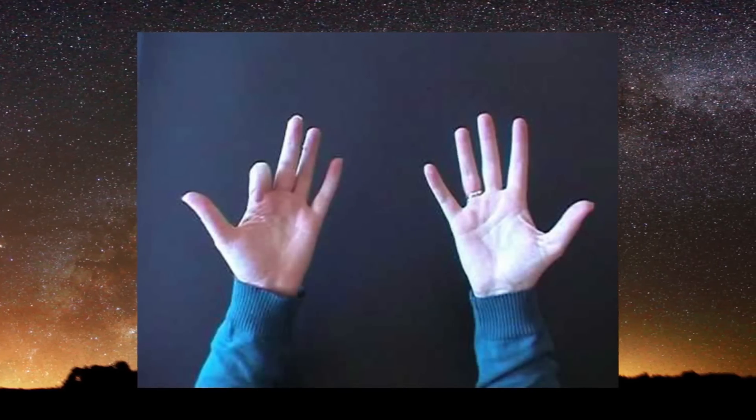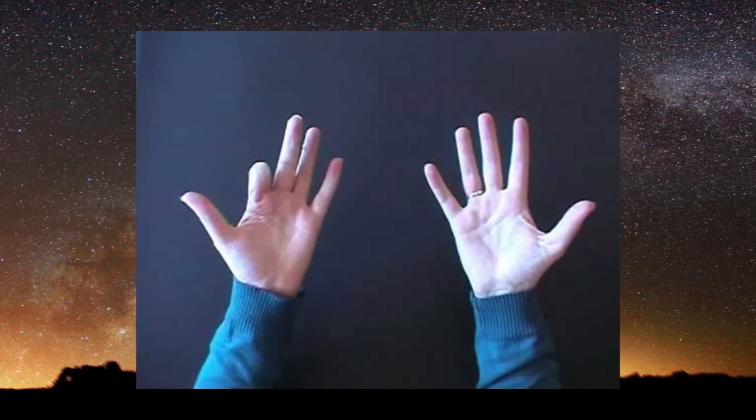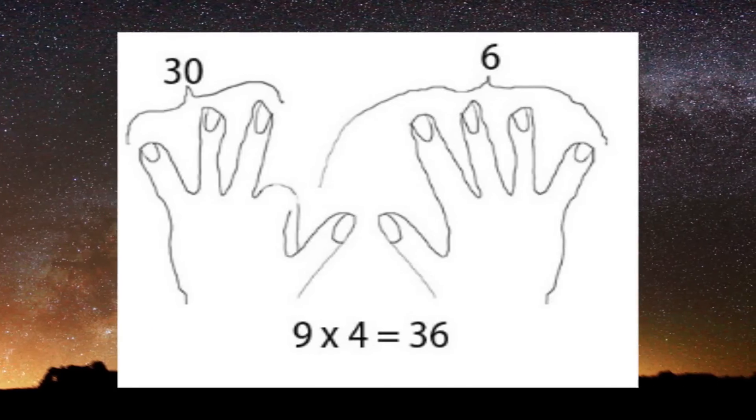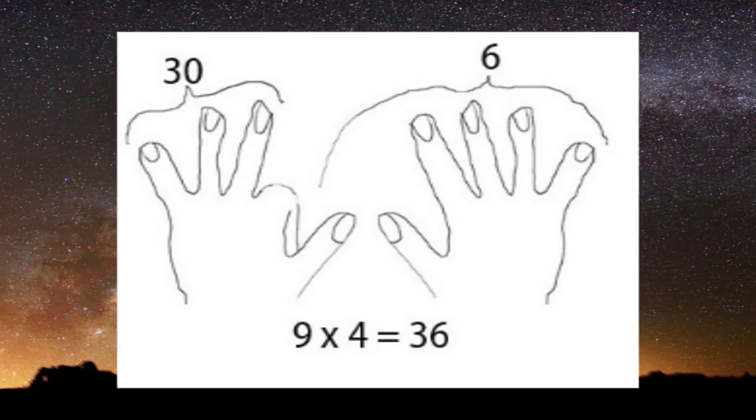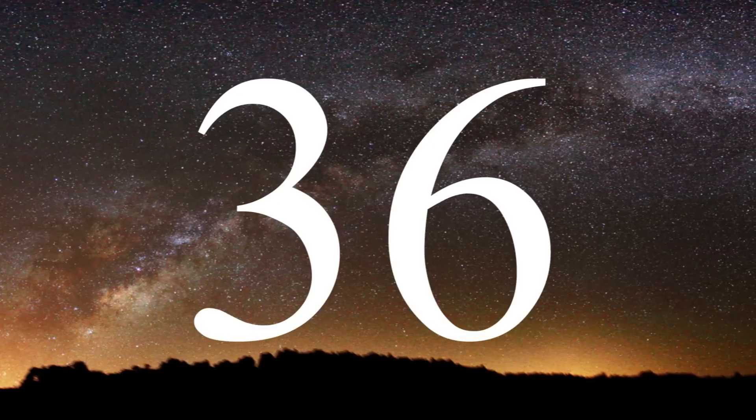To the left of your folded finger there are three fingers, which would be the tens. Next, count the fingers after the folded finger and there are six. The answer would be 36.